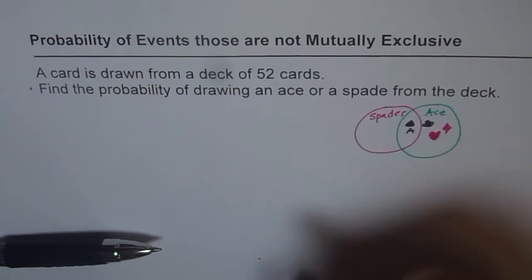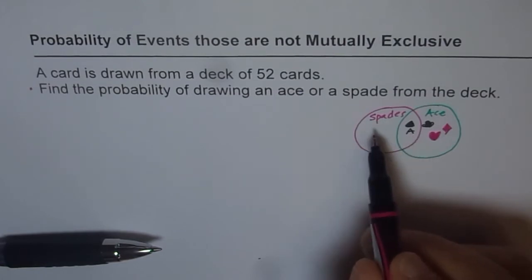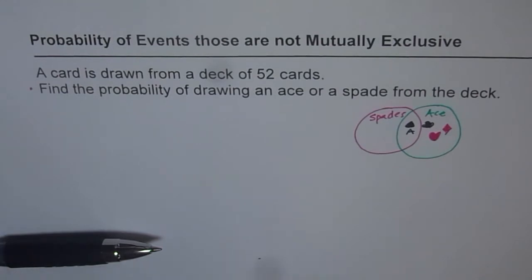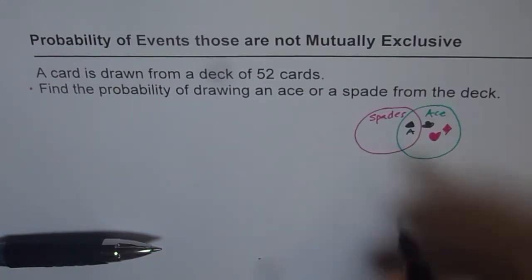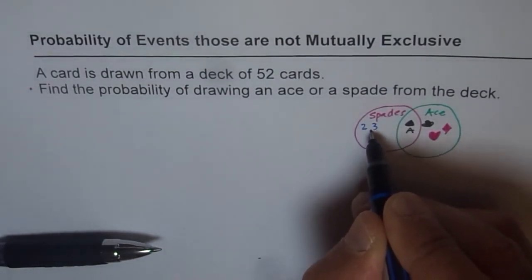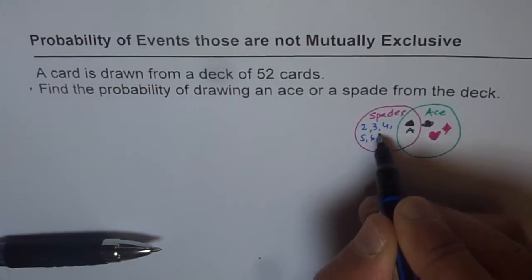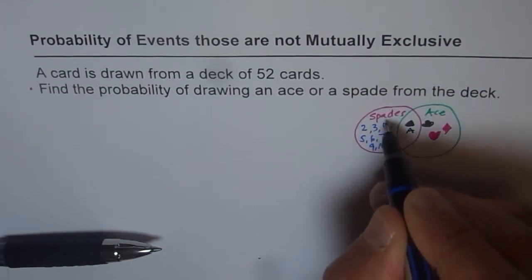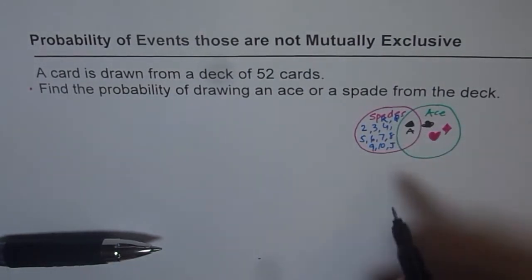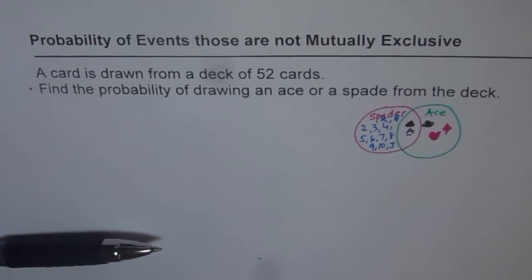So these are my aces out of which spades is common with the spade cards. So how many cards of spades do I have? As such spades we have 13 cards, including this ace. So we have this ace and the other cards are 2, 3, 4, 5, 6, 7, 8, 9, 10, jack, king and queen. So these are the other 12 cards and ace is common, do you see that?